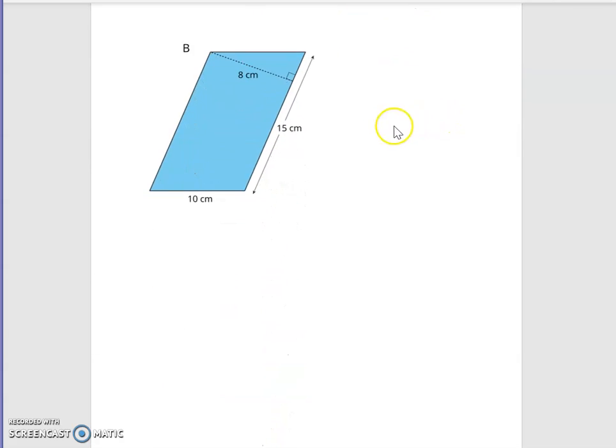If you look at figure B, this figure has three measurements on it. So before we can use our formula again, area equals base times height, we need to decide which measurements on the shape are the correct base and height.